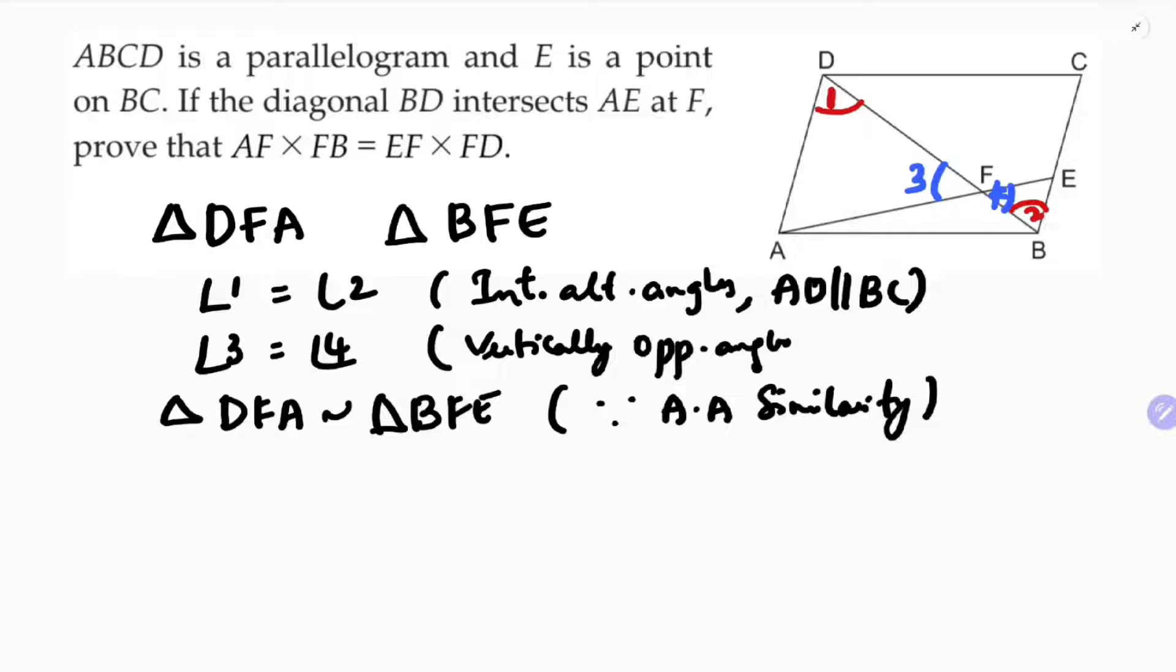Now if I'll write sides proportional, see first here take DF. You can write BF, so DF by BF. Next two sides, if you take FA by FE.